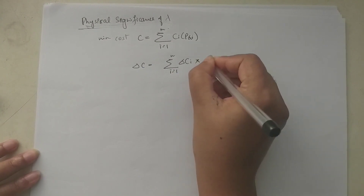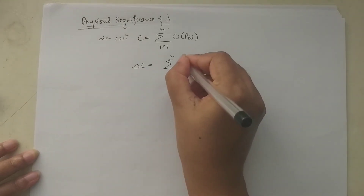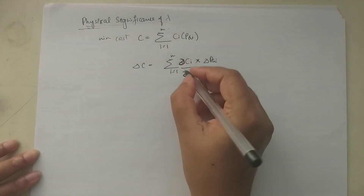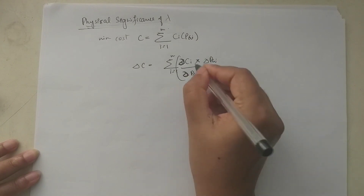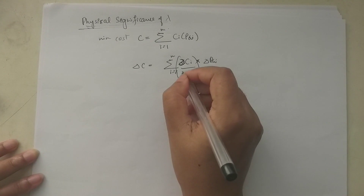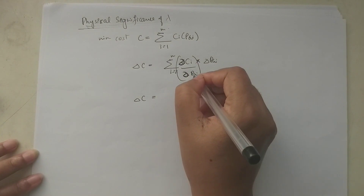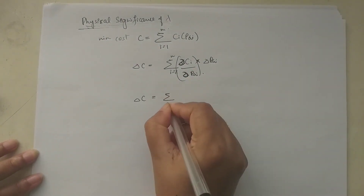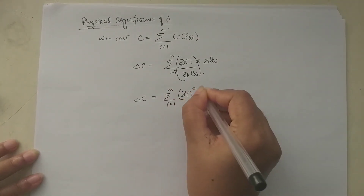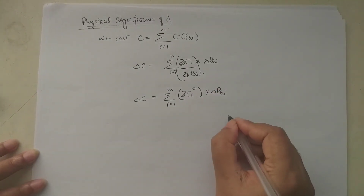Multiplying and dividing by delta P_Gi, delta C_i can be written as (∂C_i/∂P_Gi) times delta P_Gi. So the equation becomes: delta C = summation of (∂C_i/∂P_Gi) times delta P_Gi for i = 1 to m. Here ∂C_i/∂P_Gi is the incremental cost IC_i.